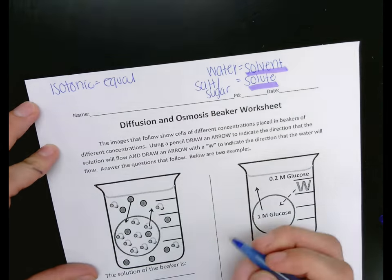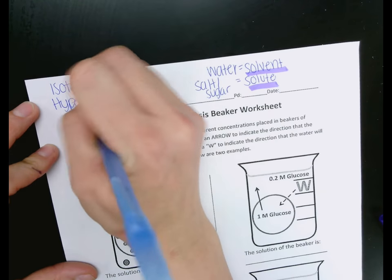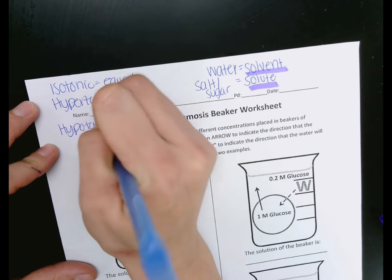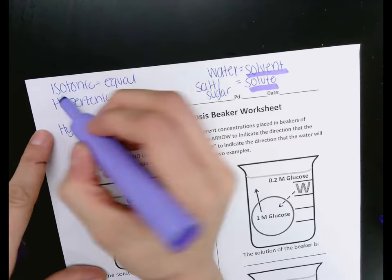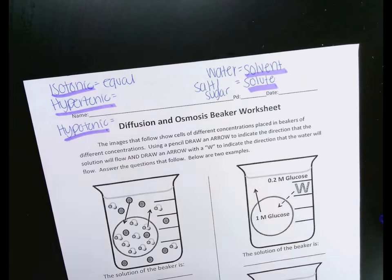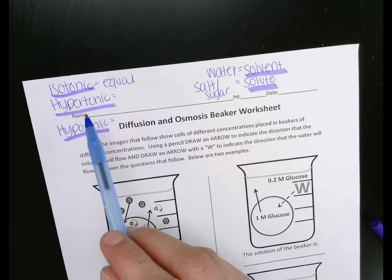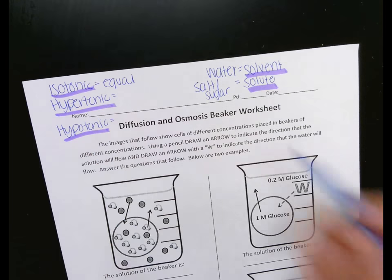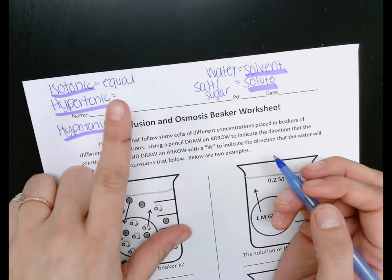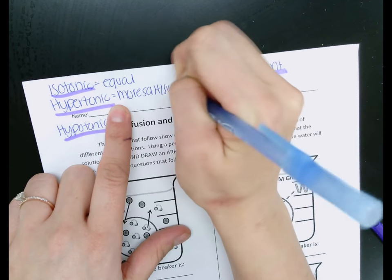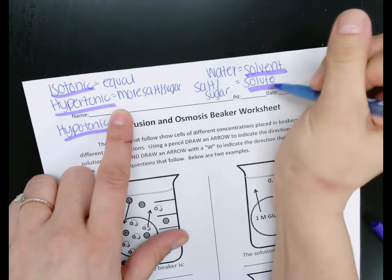The ones you guys really struggle with are hypertonic and hypotonic. When we are looking at these words, I want you to make some connections. Hyper has the word 'hyper' at the beginning — think of a hyperactive kid. Hyperactive kids, moms don't want to feed them sugar. You probably also shouldn't feed them salt because they might just get hyper from being overstimulated. So hypertonic is the side of either the beaker or the cell with more salt or sugar, also known as the solute.